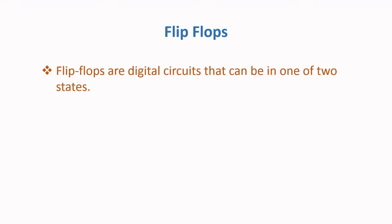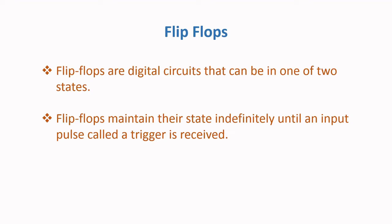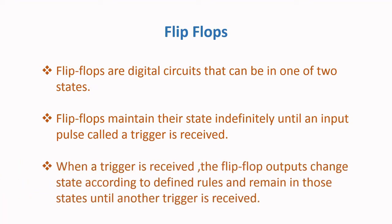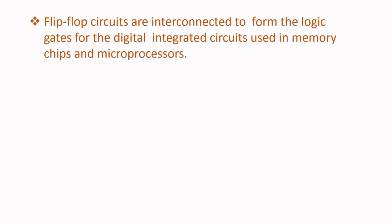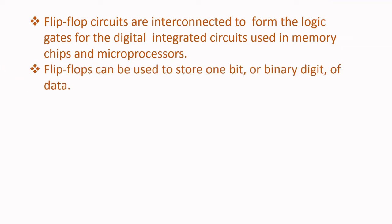Flip-flops are digital circuits that can be in one of two states. They maintain their state indefinitely until an input pulse called a trigger is received. When a trigger is received, the flip-flop outputs change state according to defined rules and remain in those states until another trigger is received. Flip-flop circuits are interconnected to form logic gates for digital integrated circuits used in memory chips and microprocessors. Flip-flops can be used to store one bit, or binary digit, of data.